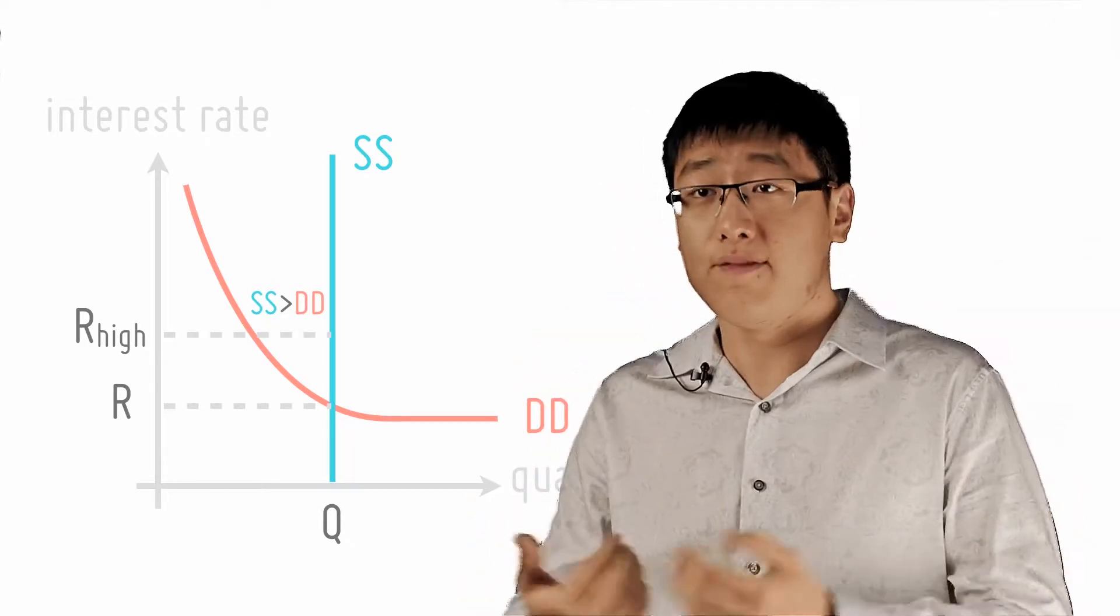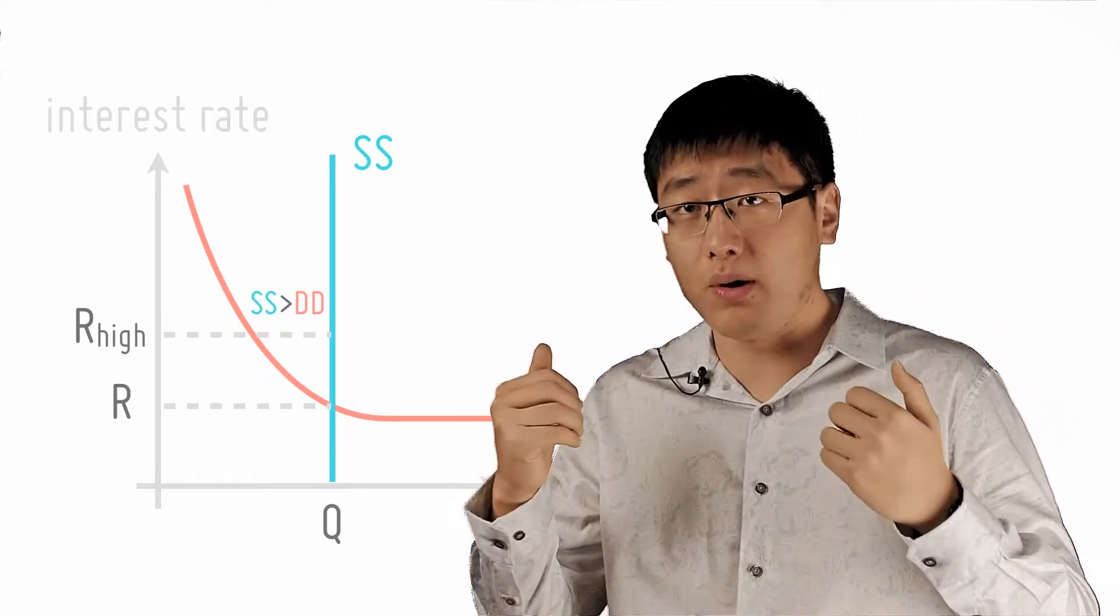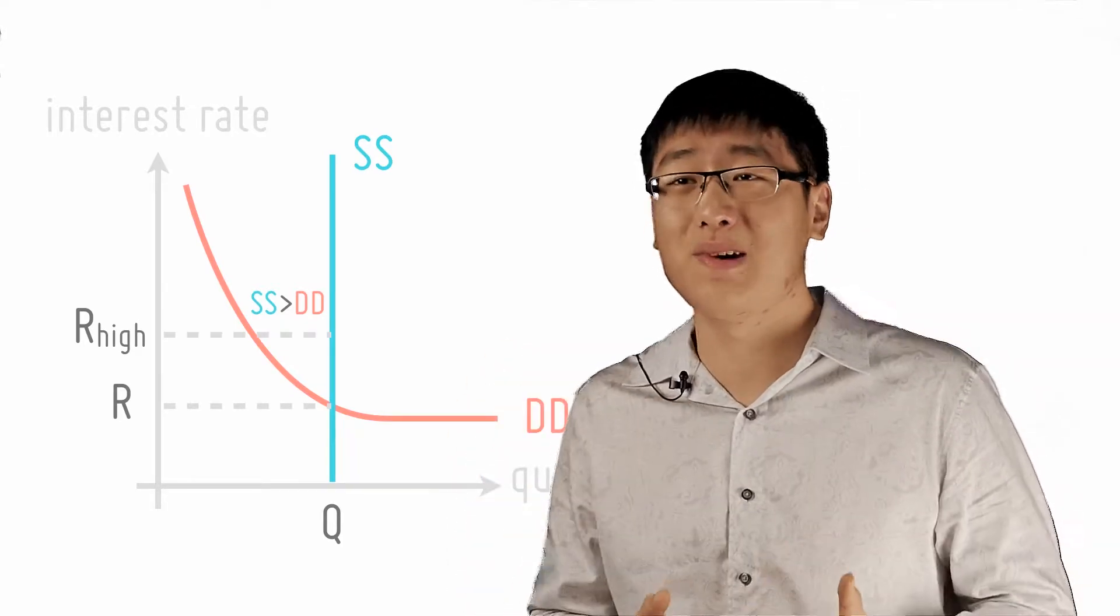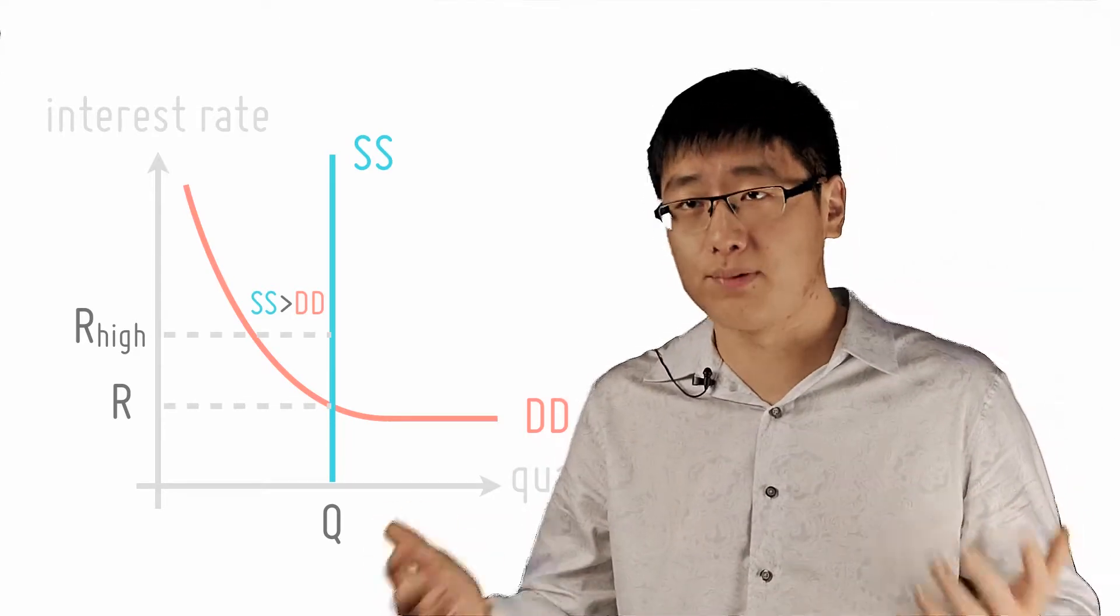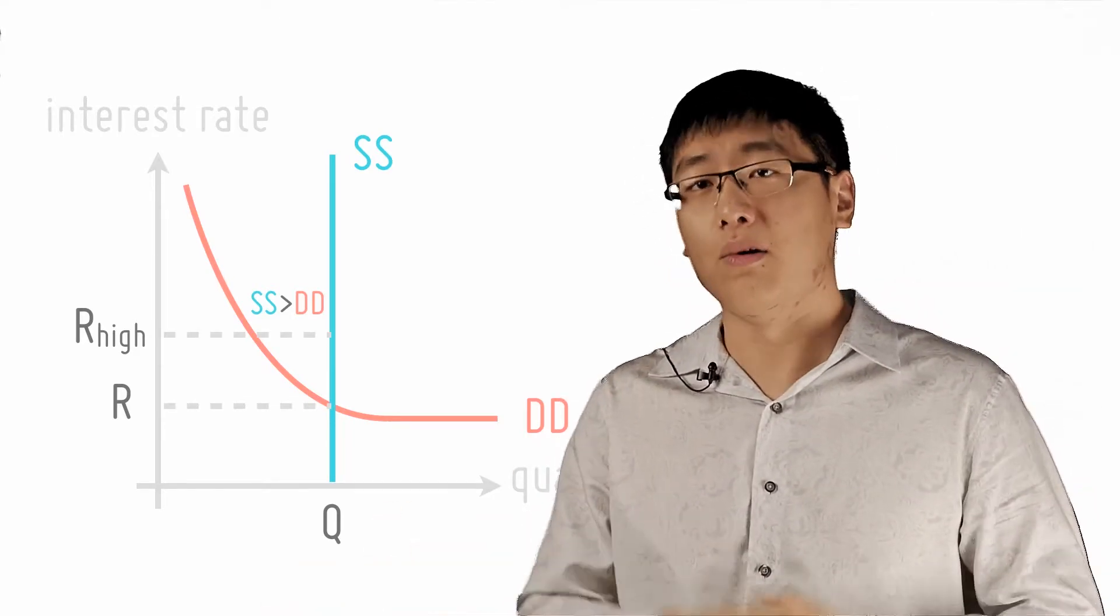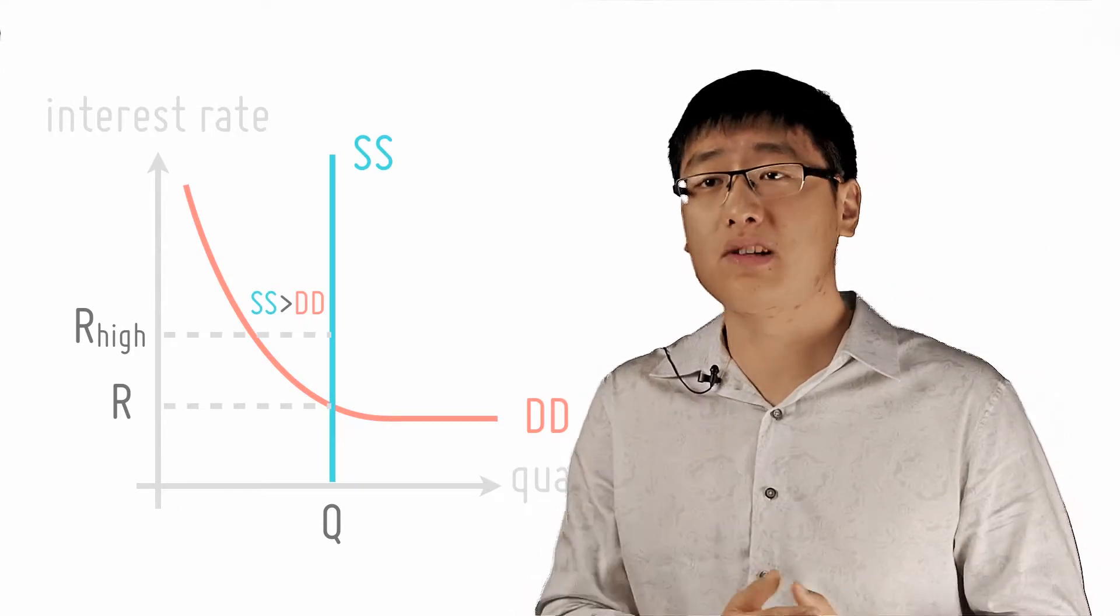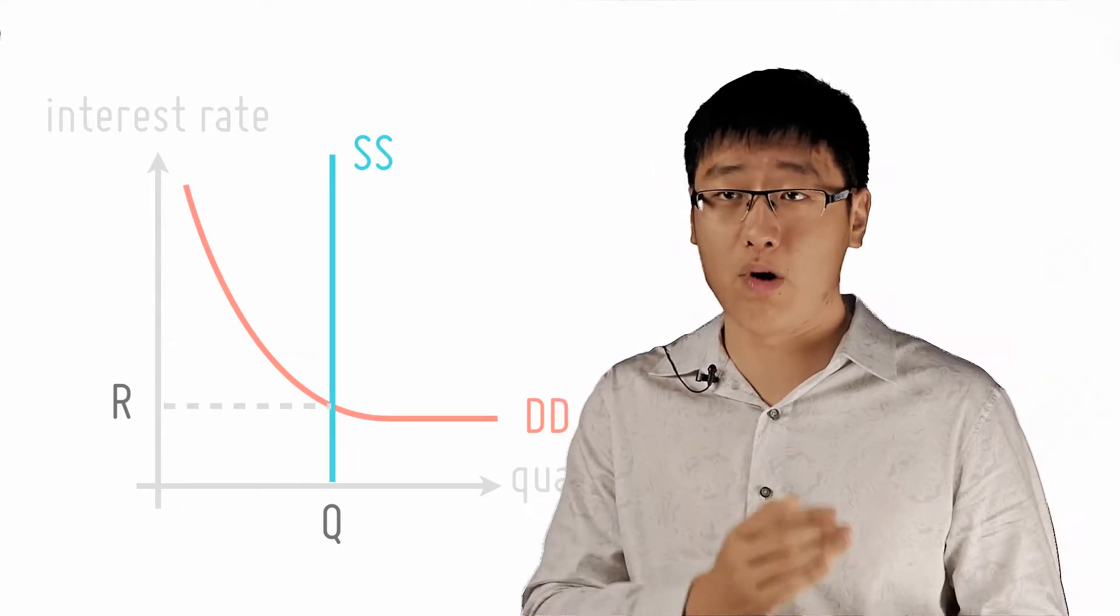So think about this. If I'm a bank and I want people to hold on to more money, I must lower the interest rate. If not, people will find it too expensive to hold on to money because interest rate is the price of holding on to money. So I lower interest rate and the quantity of money demanded increases and we move towards the equilibrium.